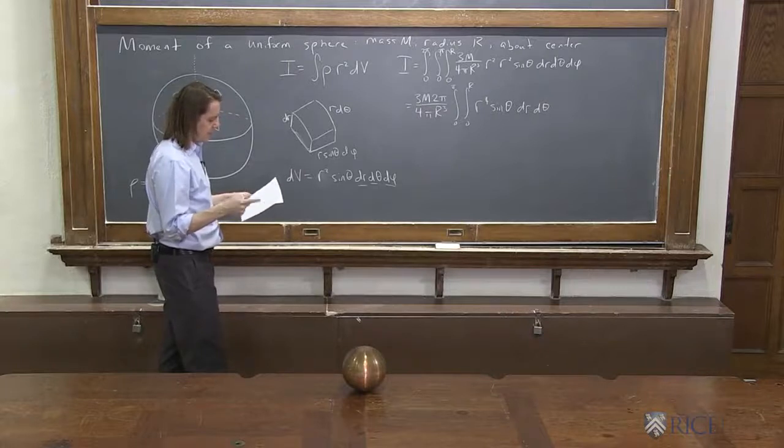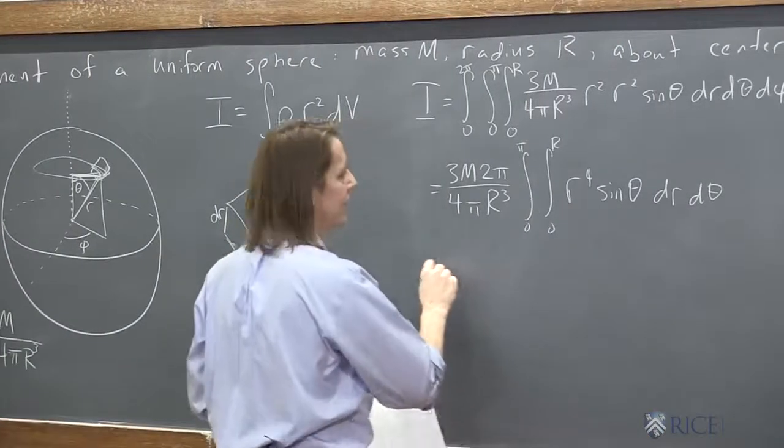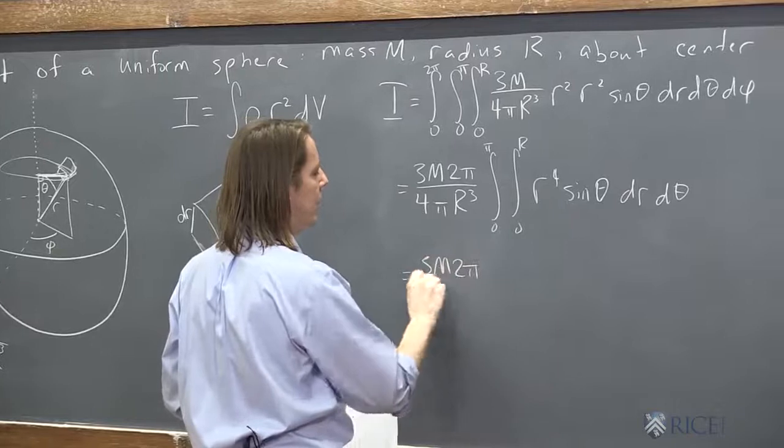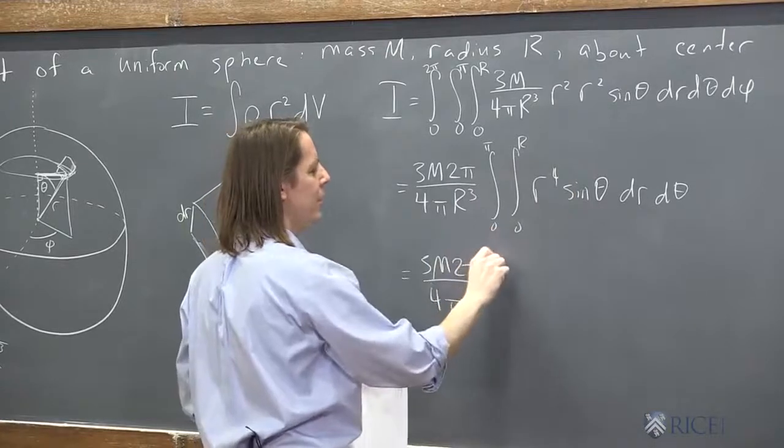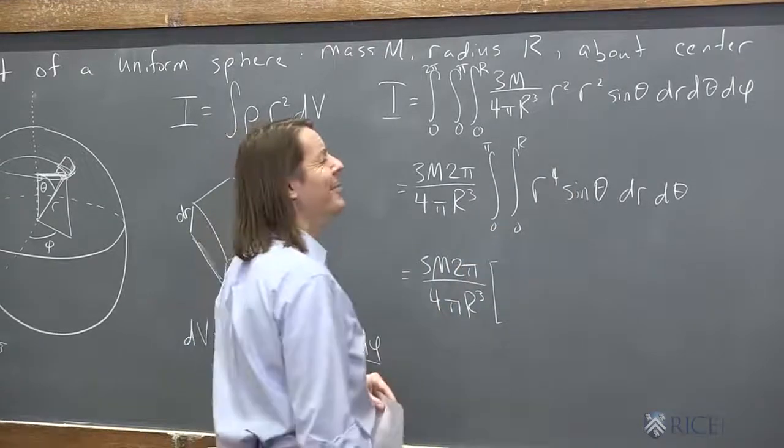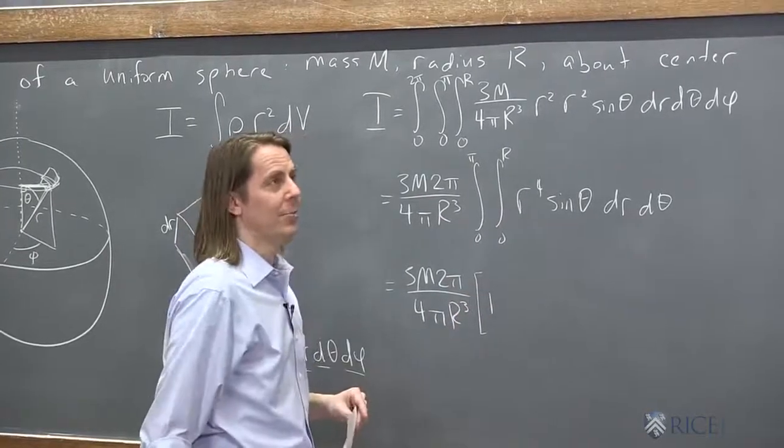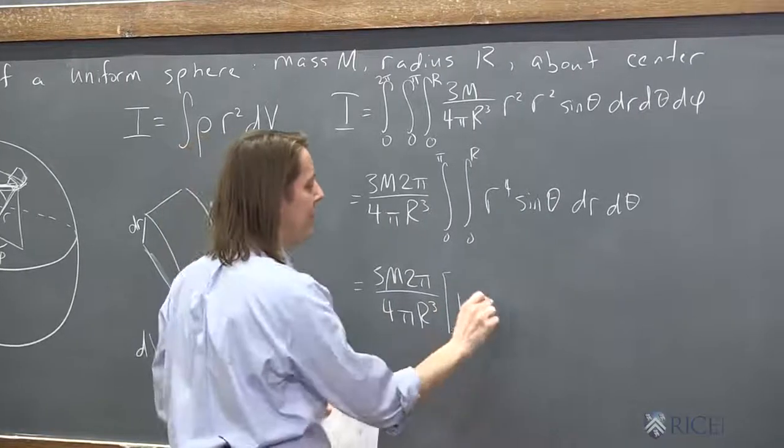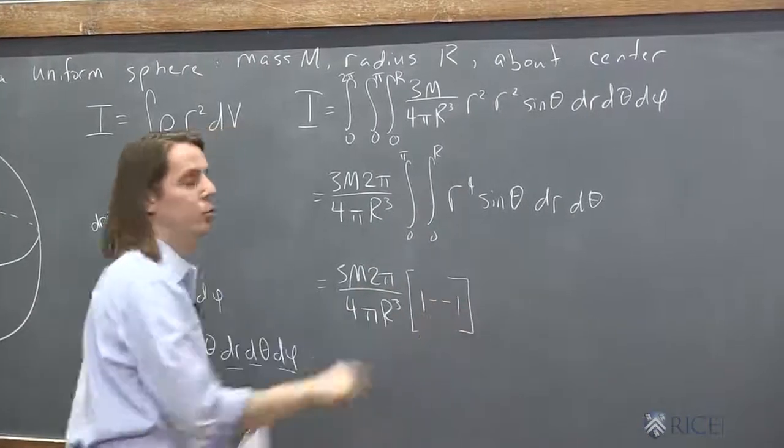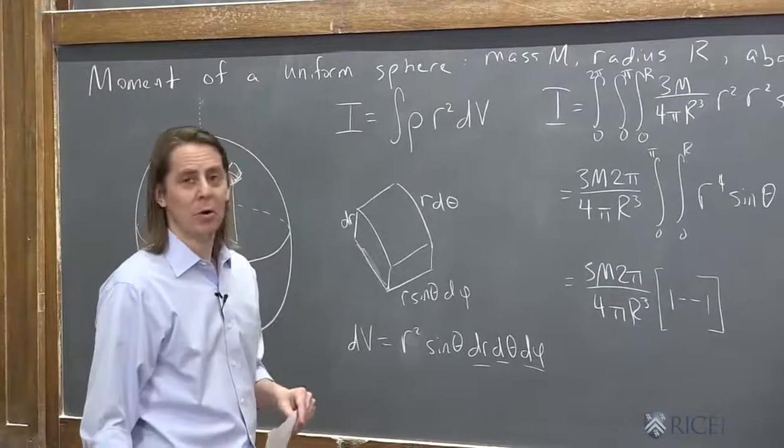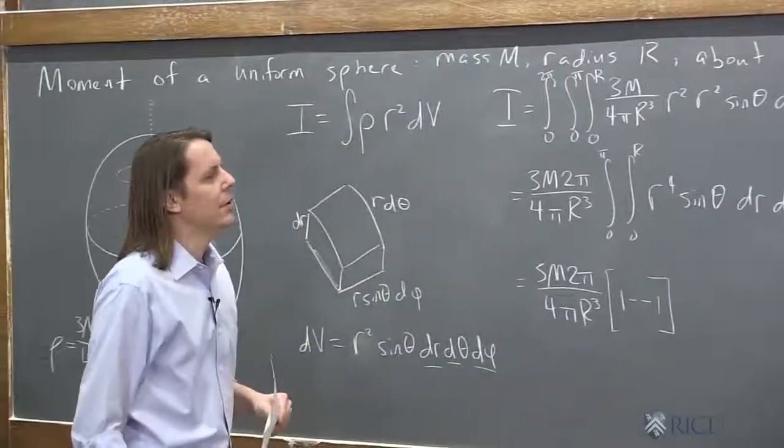So now let's do the theta integral. Integral sine is negative cosine. So 3M times 2π over 4π R cubed, negative cosine evaluated at π and 0. I'm just going to do the integral in one step here. Negative cosine at π is 1, minus negative cosine of 0 is negative 1, minus negative 1, that's 2. So fortunately that didn't give you 0, because that would be bad.